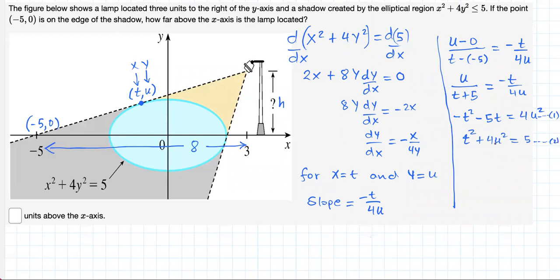Great. Now, there are several ways to solve this system of equations, but one quick way is this. What if we add these two equations vertically component-wise? Well, then these two will cancel each other and we will have minus 5t plus 4u squared equals 4u squared plus 5. Canceling these two, minus 5t equals 5. Therefore, t equals negative 1. We found the first coordinate that we wanted.